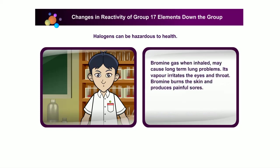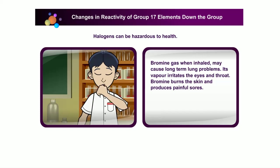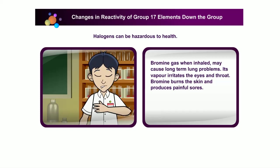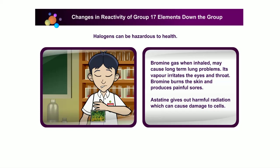Bromine gas, when inhaled, may cause long-term lung problems. Its vapour irritates the eyes and throat, and bromine burns the skin and produces painful sores. Astatine gives out harmful radiation which can cause damage to cells.